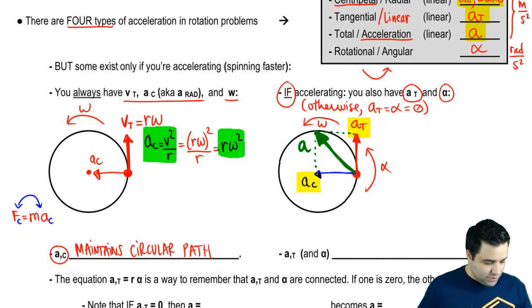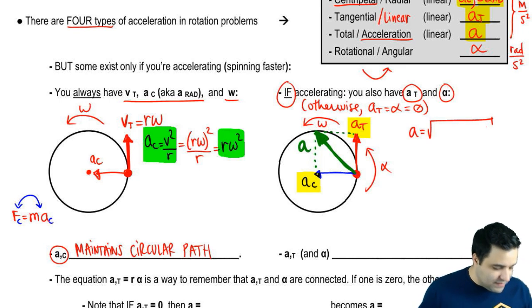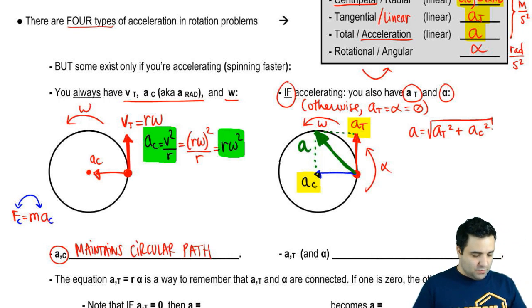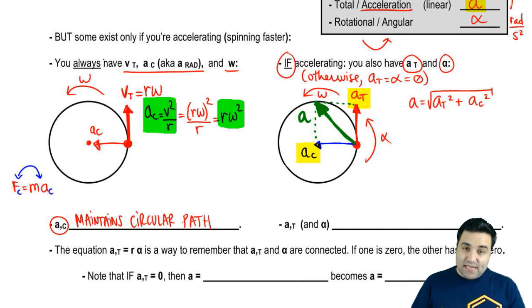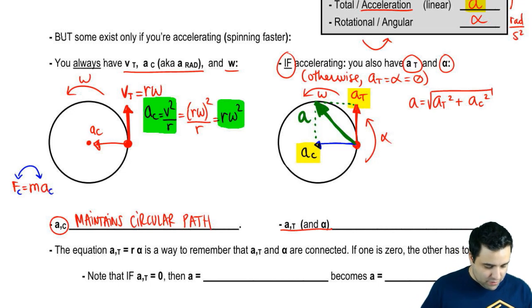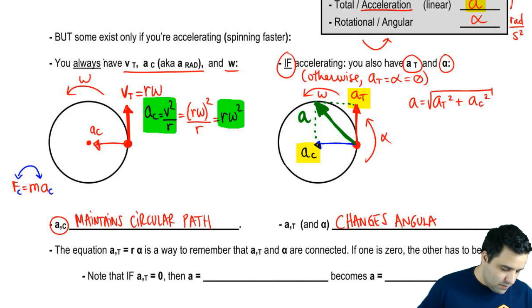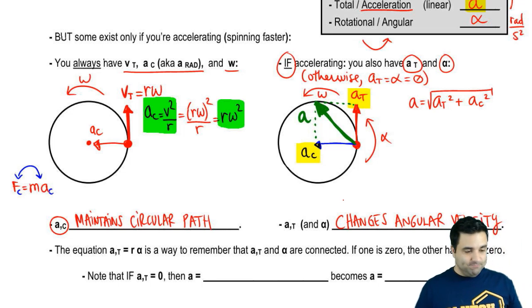And this is just vector addition. So A is the square root—it's the Pythagorean of the two sides. So AT squared plus AC squared. So that's the total acceleration. Whereas AC maintains your circular path, these guys here are responsible for changing angular speed or velocity. Technically it changes angular velocity. Changes means it could be going faster or slower.